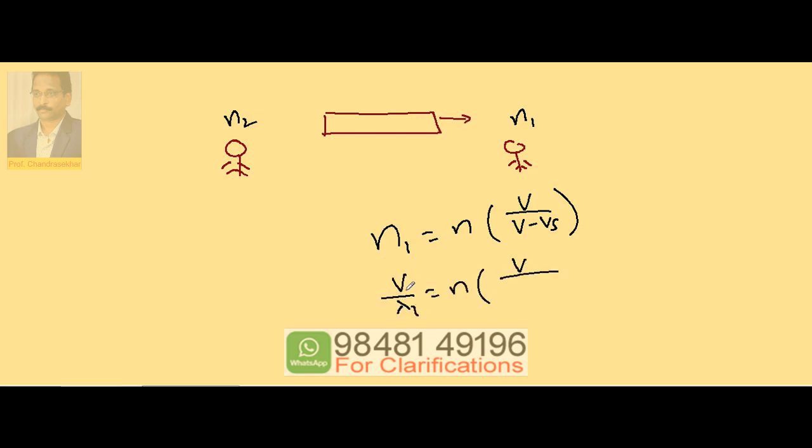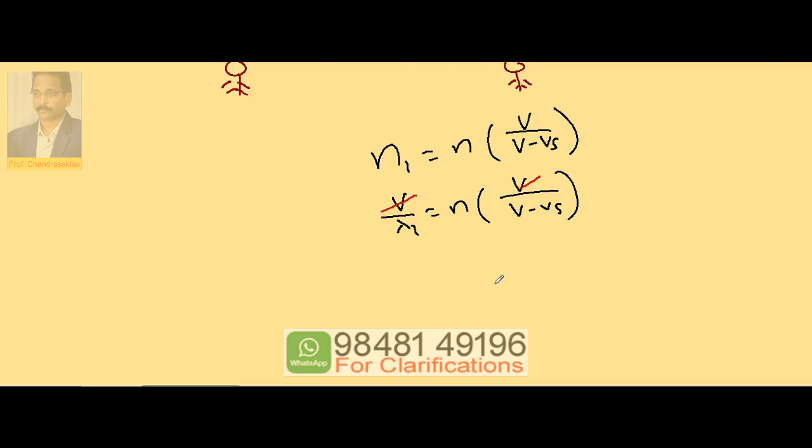Lambda into V by lambda 1 equals N into V by V minus Vs. On both sides I can cancel V, so lambda 1 equals V minus Vs by N.